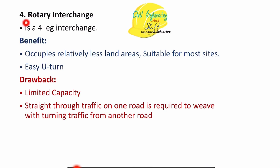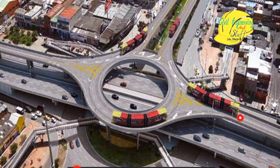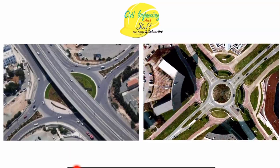The fourth category is the rotary interchange, which is a four-leg interchange. Its benefit is that it occupies less area and is suitable for most cities, providing easy U-turns. However, it has limitations: it serves a limited capacity and turning traffic mixed with straight-through traffic can sometimes be confusing. Earlier these were not commonly used, but their use is now gaining attention among designers.